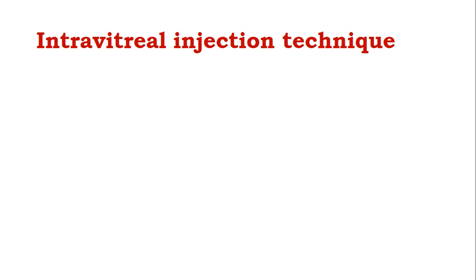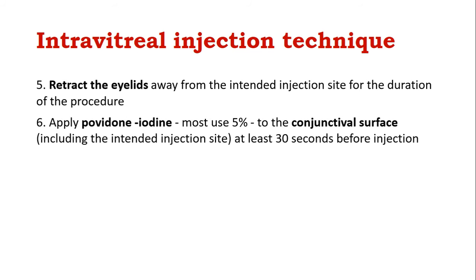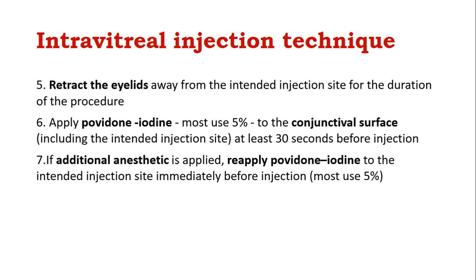The fifth step is to retract the eyelids away from the intended injection site for the duration of the procedure. The sixth step is to apply povidone-iodine — most commonly 5% — to the conjunctival surface, including the intended injection site, at least 30 seconds before the injection.